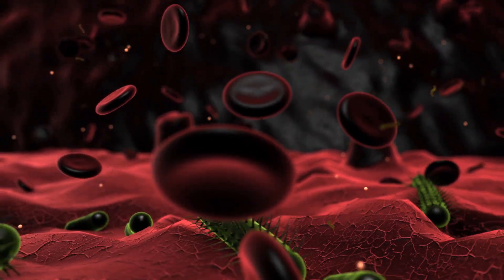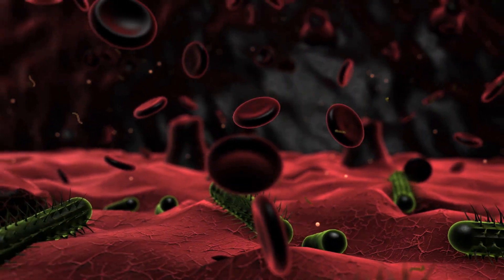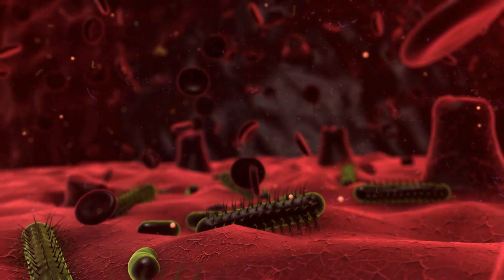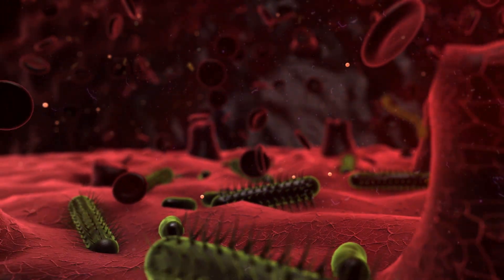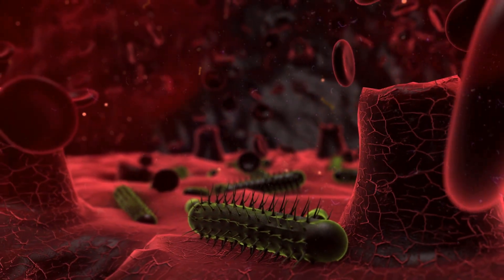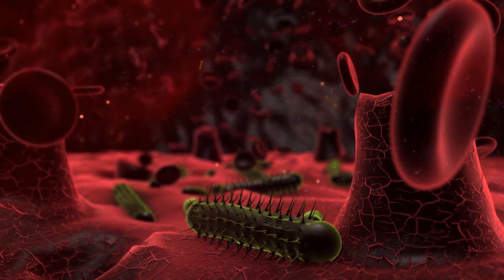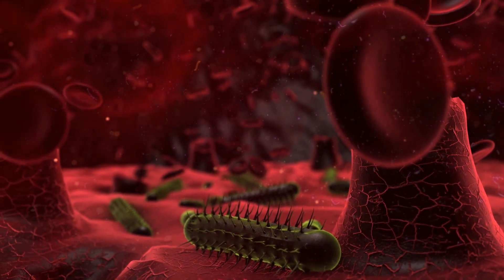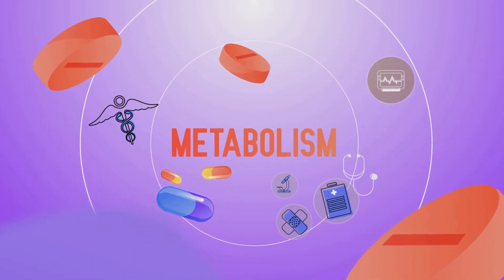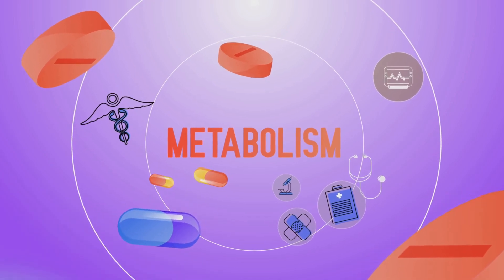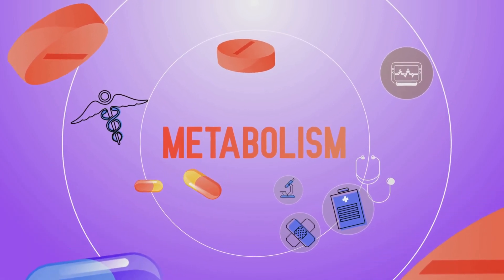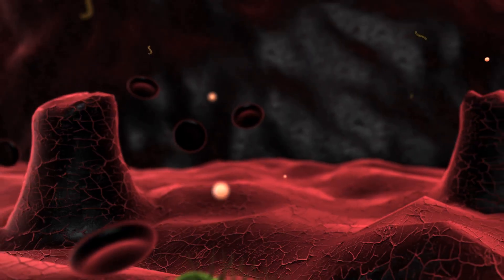Although the body's homeostatic mechanisms prevent gross fluctuations in systemic pH, localized acid-base disturbances at the tissue or cellular level are increasingly recognized as critical determinants of metabolic signaling and microbial colonization dynamics. Metabolically, the catabolism of simple sugars such as glucose, fructose, and sucrose via glycolysis and the tricarboxylic acid (TCA) cycle yield CO2 and water as terminal products.